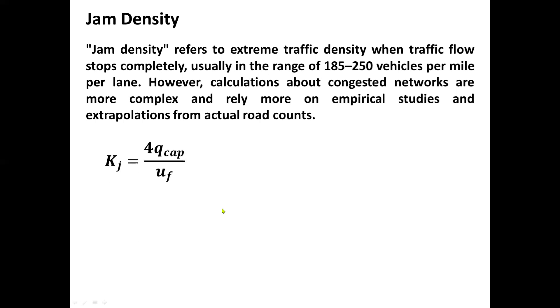In order for us to calculate the value of jam density we have this given formula: K sub j equals 4 times Q sub cap all over U sub f. Q sub cap stands for maximum capacity, K sub j is jam density in vehicles per hour, and U sub f is the free flow speed.